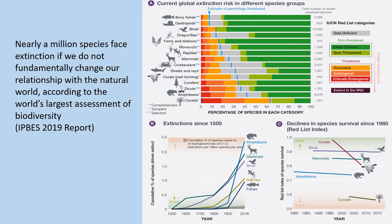A worrying report came out — the biodiversity report, which said very worryingly that nearly a million species face extinction if we do not fundamentally change our relationship with the natural world. Increasingly we're seeing species move towards the vulnerable and endangered categories, which are growing. The list of extinctions has been on the rise in the last 100 years, with very high rates of growth in extinctions — a very worrying thing.